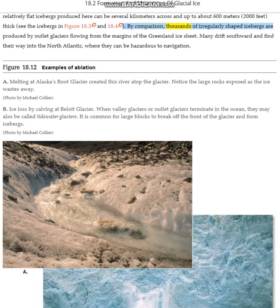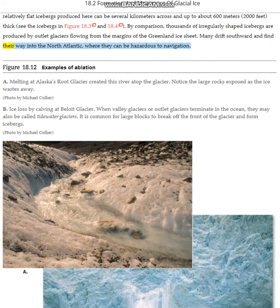By comparison, thousands of irregularly shaped icebergs are produced by outlet glaciers flowing from the margins of the Greenland ice sheet. Many drift southward and find their way into the North Atlantic, where they can be hazardous to navigation.